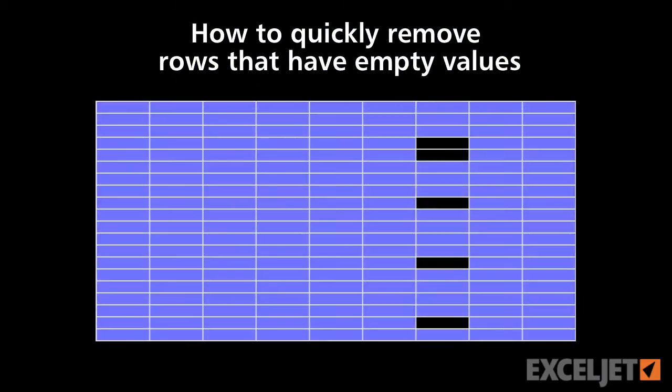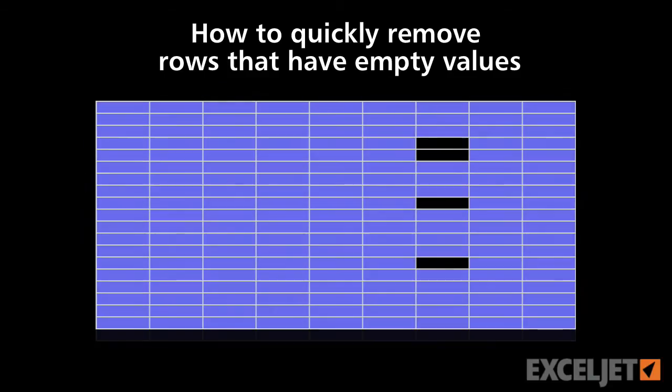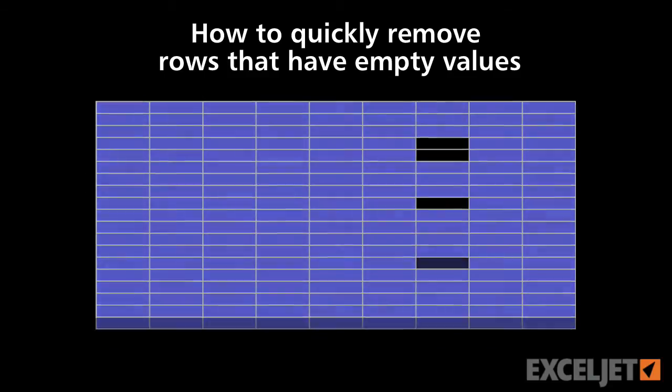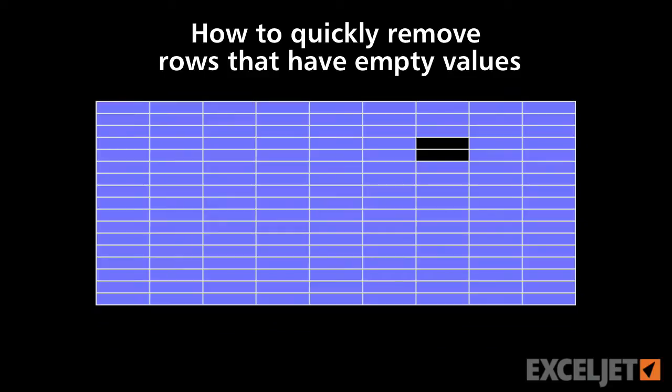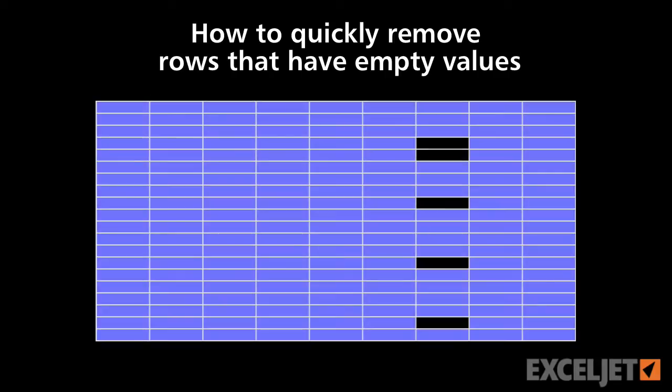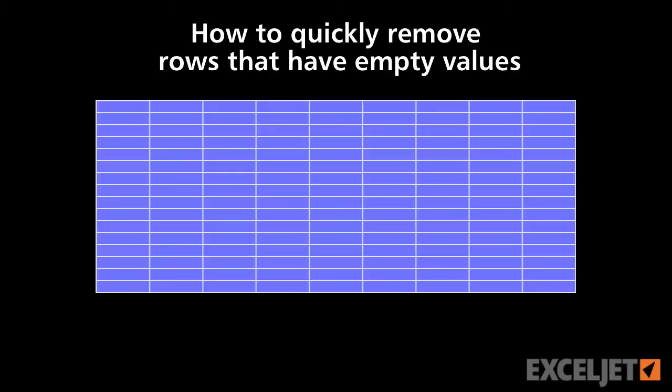Sometimes you need to remove rows from a list or table that are missing values. You could delete the rows one by one, but that'll take a long time if you have a big list. In a previous tip, we showed you how to delete blank rows. In today's Excel Jet tip, we'll show you a cool way to delete rows that are missing values in one step, even when your list contains hundreds or thousands of rows. Let's take a look.